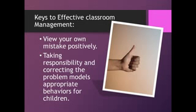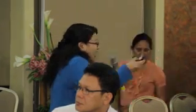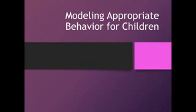Teachers should also view their own mistakes positively. If you accidentally pick up the wrong books, don't say 'How stupid of me.' Don't belittle yourself — children will see that. Instead, say: 'Oops, I made a mistake. Okay, I'm going to correct it.' You don't need to lambast yourself. You model it. That teaches children that mistakes are okay and correctable.